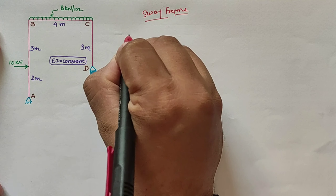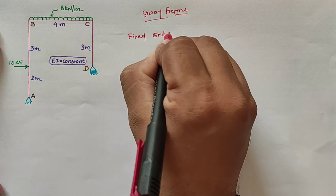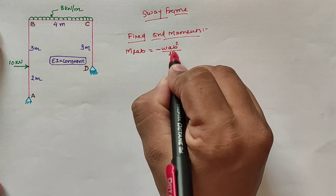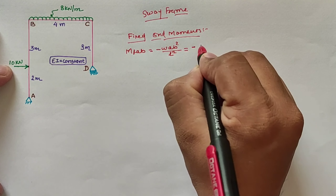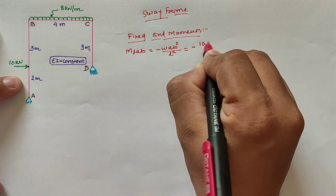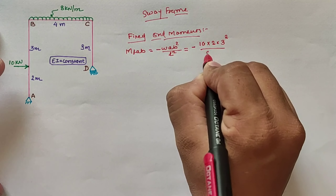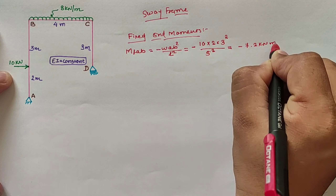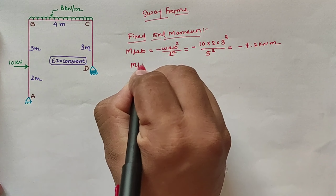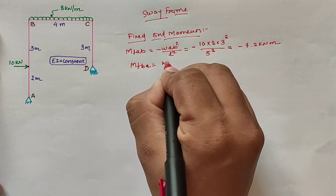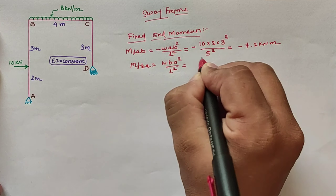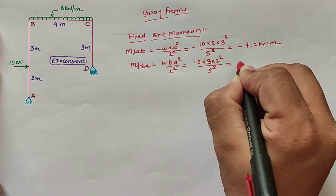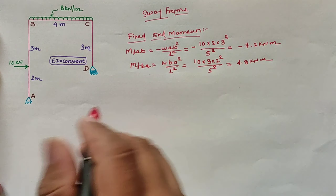First of all, going for the fixed end moment for span AB: MF_AB is minus W·A²·B divided by L², which is equal to minus 10 × 2² × 3 divided by 5², giving us minus 7.2 kilo Newton meter. Similarly, for BA span, our value is W·B²·A divided by L², which is equal to 10 × 3² × 2 divided by 5², which equals 4.8 kilo Newton meter.